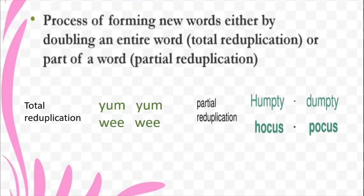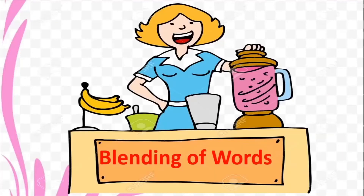The first vocabulary exercise was reduplication. Now let us look at the next one: blending of words. What is the meaning of blending? As in the image, a lady has taken a blender, added bananas, sugar, and milk, and is blending it to make a milkshake. When you blend words, in the same way you mix up words and make a blend. You do not exactly put words in a mixer, but the idea is similar.